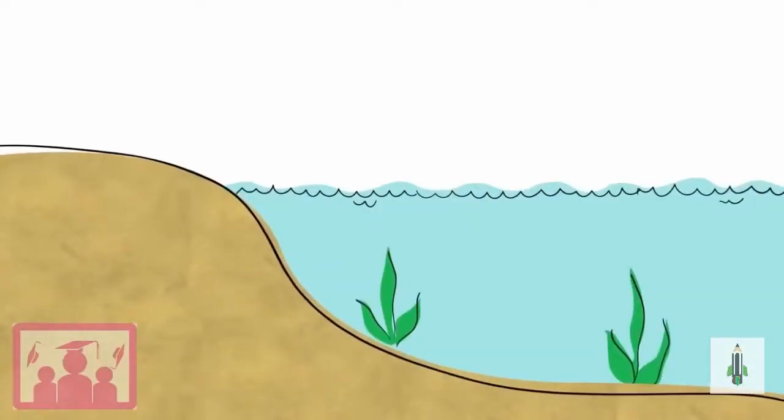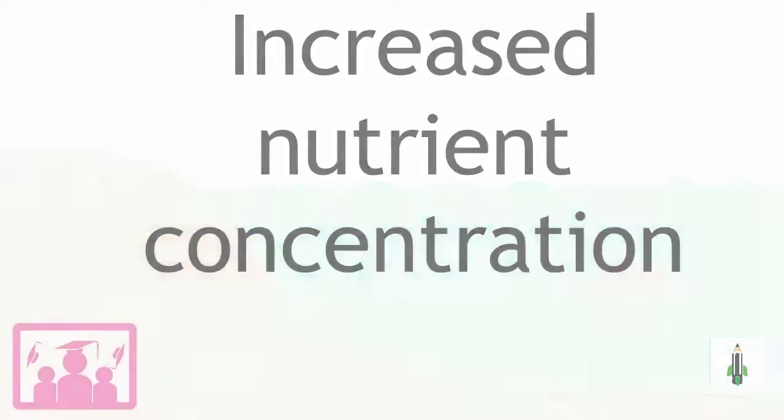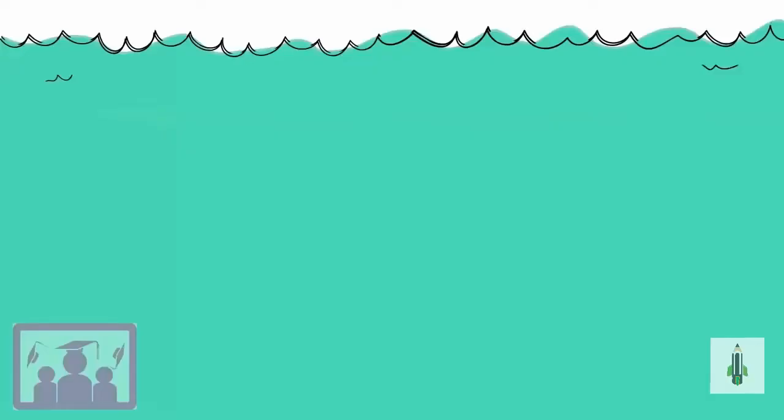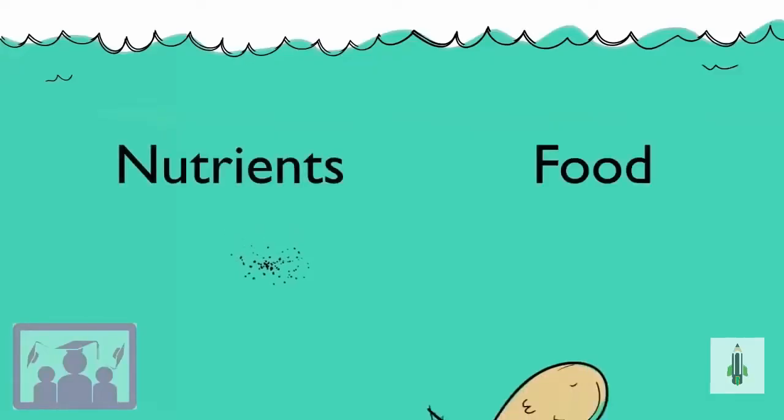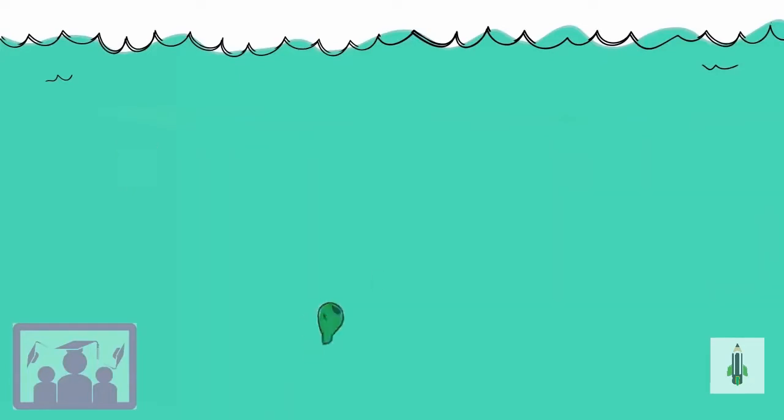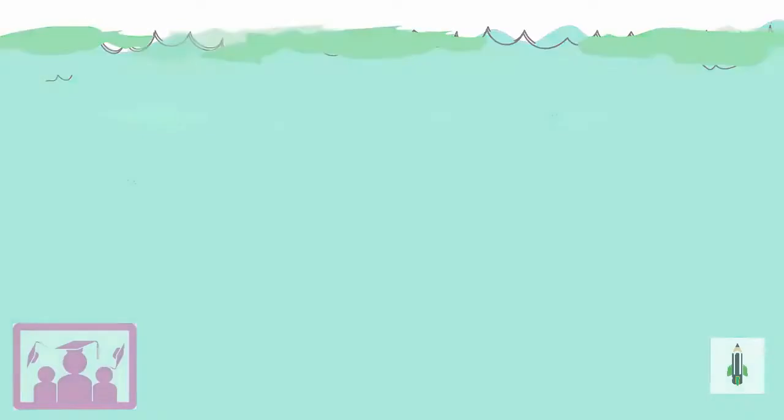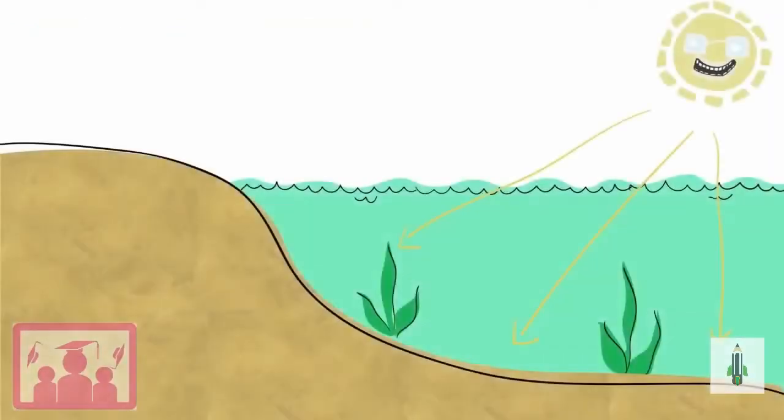These fertilizers are washed into the river or lake system, leading to an increase in nutrient concentration in the water. The nutrients are food for algae. The algae grow and reproduce quickly, forming a thick green bloom in the water.